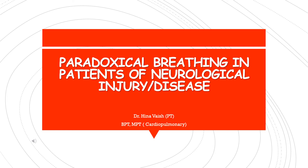Today I'm going to talk about one of the specific respiratory impairments seen in neurological patients. Neurological patients may suffer from a lot of respiratory impairments including decreased chest expansion, abnormal or inefficient breathing patterns, abnormal bony changes, decreased cuff effectiveness, decreased coordination of breathing with functional activities, decreased ability to cough, and decreased ability to self-maintain bronchial hygiene.